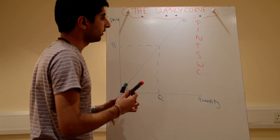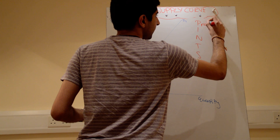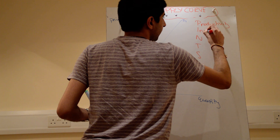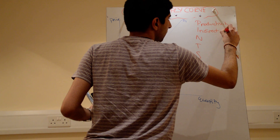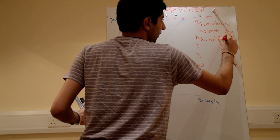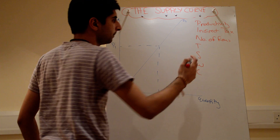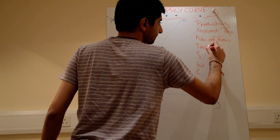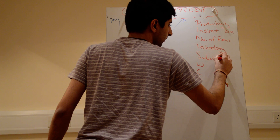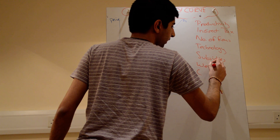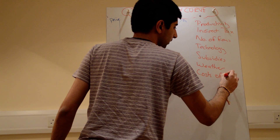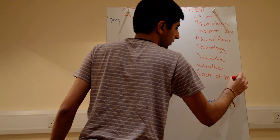Let's define what PINTSWC stands for. P is productivity. I is indirect tax. N is number of firms in the industry. T is technology. S is subsidies. W is weather. And C is generically cost of production — including wages, raw material prices, commodity prices, and fuel prices. Cost of production is really the most important factor overall.